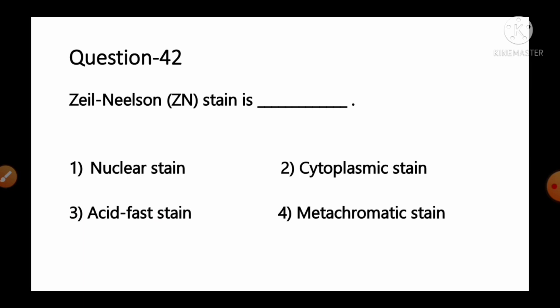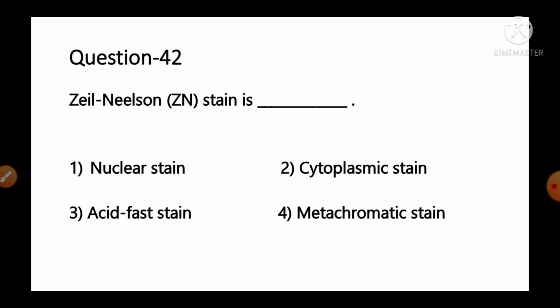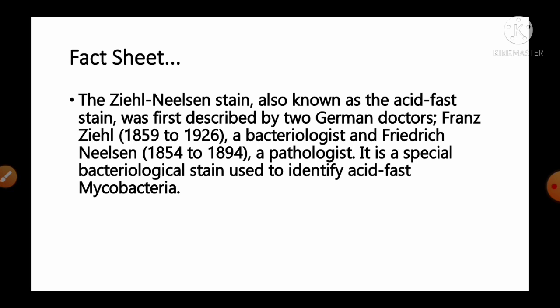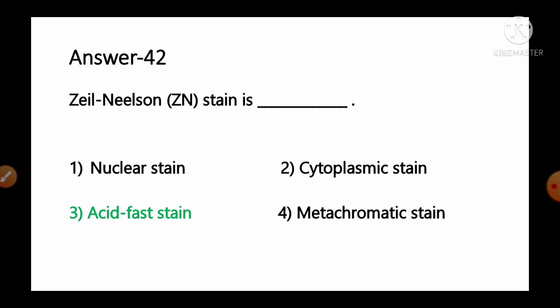Question number 42: Ziehl-Neelsen stain is — options: 1) nuclear stain, 2) cytoplasmic stain, 3) acid fast stain, 4) metachromatic stain. The Ziehl-Neelsen stain, also known as the acid fast stain, was first described by two German doctors — Franz Ziehl, a bacteriologist, and Friedrich Neelsen, a pathologist. It is a special bacteriological stain used to identify acid fast mycobacteria, particularly Mycobacterium tuberculosis. So option number 3, acid fast stain, is the correct answer.